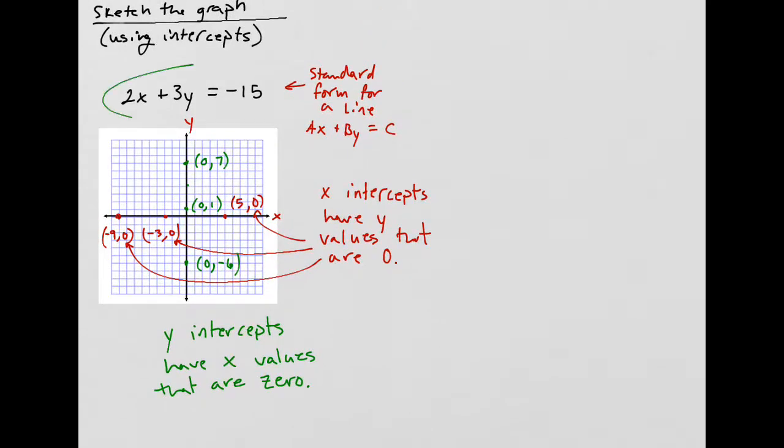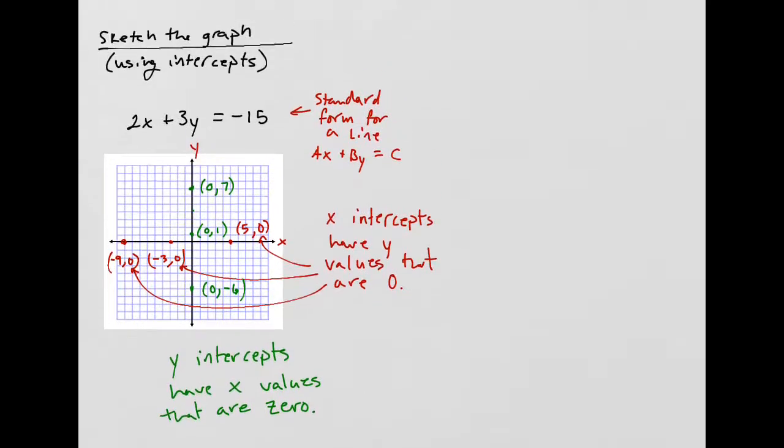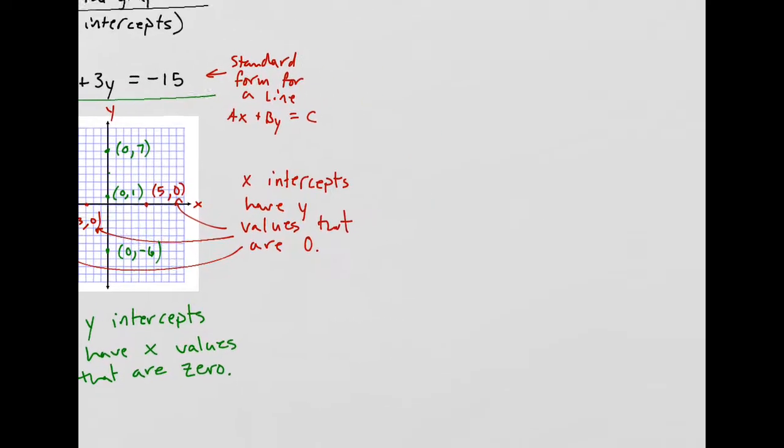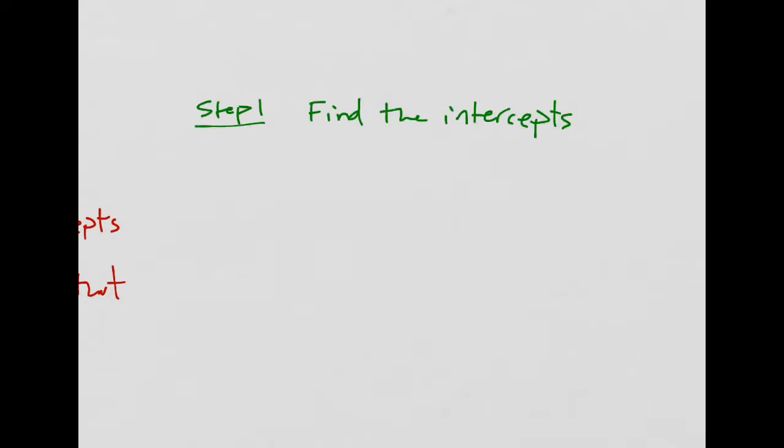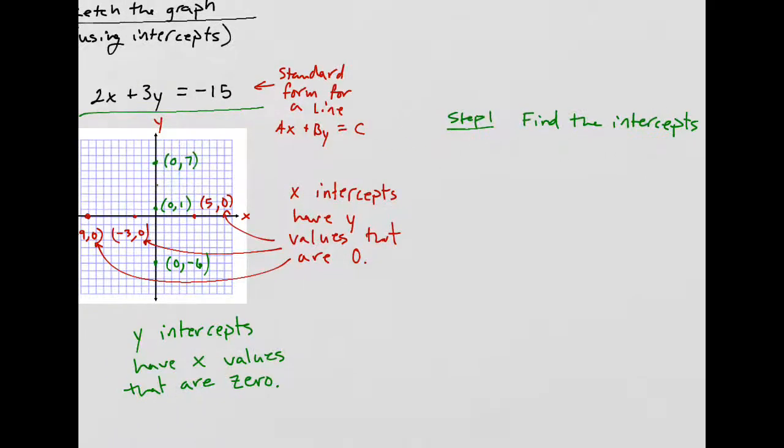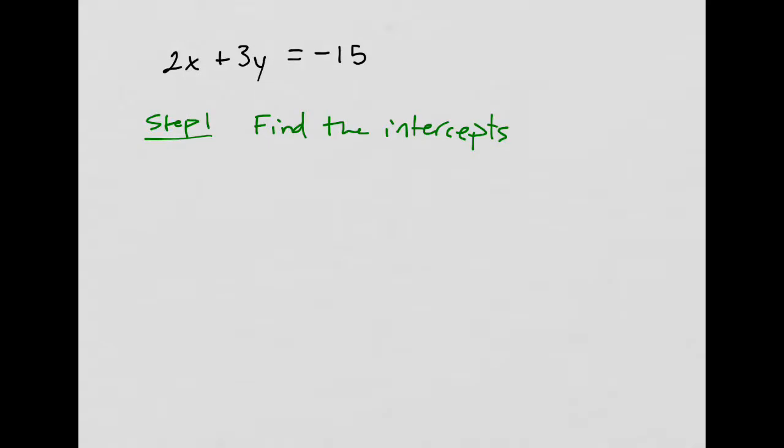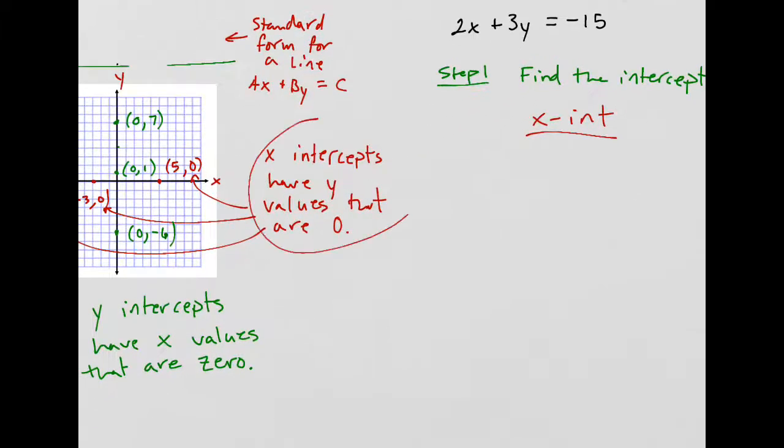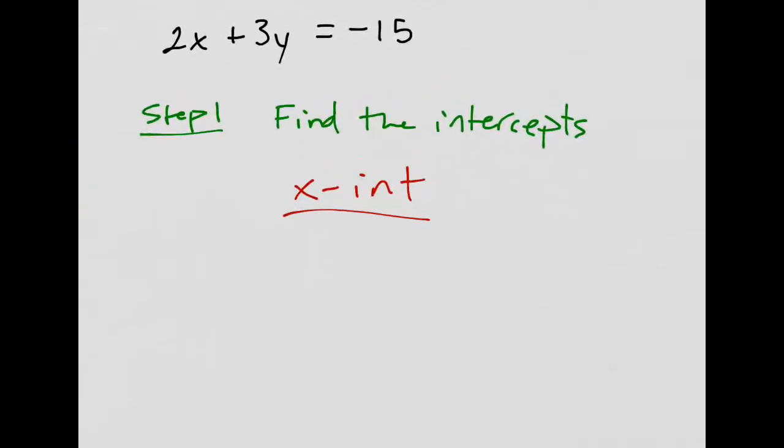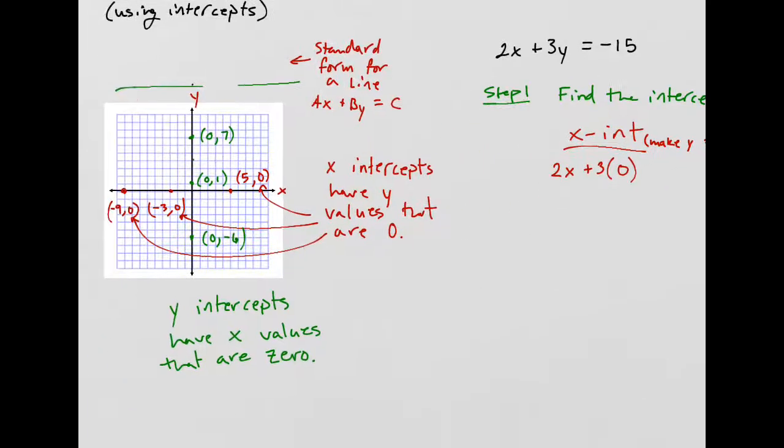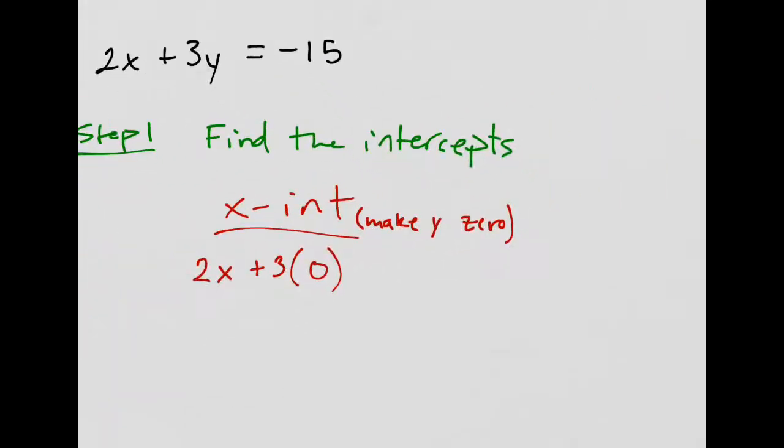So, how do we find the X and Y-intercepts of an equation like this? So, that's the goal, and I'm going to do an example for this one. So, I'll show it to you. So, I take this, find the intercepts. For the X-intercepts, here's how we do it. X-intercepts have Y-values that are 0. All right. So, I'm going to write this equation down. 2X plus 3 times 0. I'm making Y 0. Why am I doing that? I just explained over here. If you're an X-intercept, the Y-coordinate is 0.